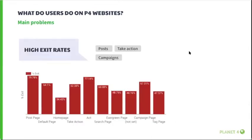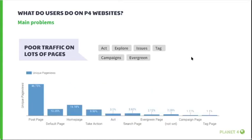The main problem for these two journeys is high exit rates — so why do users leave the sites? When users come from external sources, labels used in search results, links, or ads might not accurately describe the page they lead to. Also, too many paths on take action pages create indecision, and too few paths on post and campaign pages can create dead ends. Another problem identified is poor traffic on many pages such as act, explore, issues, tags, campaigns, and evergreen pages — these are not easy to access.